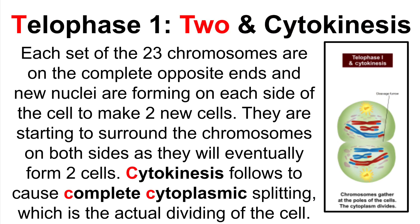Then we have telophase one and cytokinesis. During this phase, each set of the 23 chromosomes are on the complete opposite ends and new nuclei are forming on each side of the cell to create two new cells. They are starting to surround the chromosomes on both sides as they will eventually form two cells. Cytokinesis follows to cause complete cytoplasmic splitting, which is the actual dividing of the cell. Remember that the T in telophase stands for two, which is the formation of the two nuclei, and the C in cytokinesis stands for complete cytoplasmic splitting.